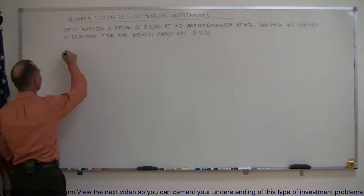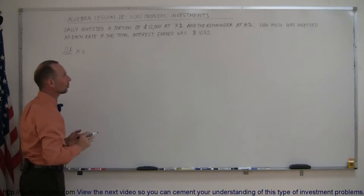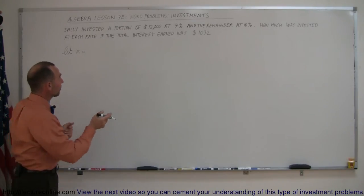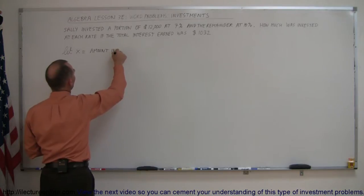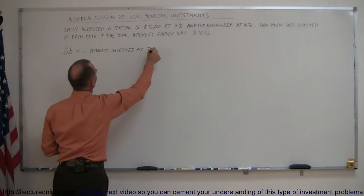Alright, let's start by defining. Let X equal, and there's two amounts that are being invested. So let X equal the first amount. Let X equal the amount invested at 7%.